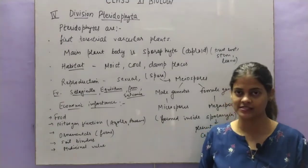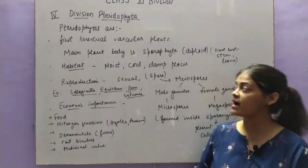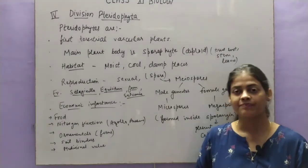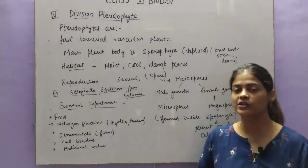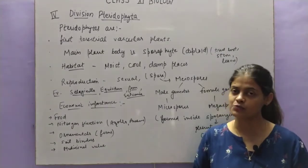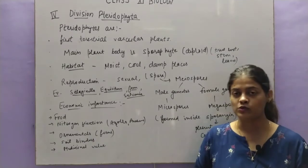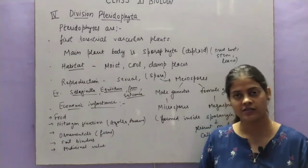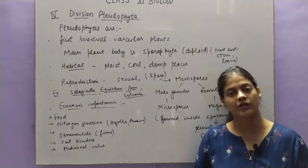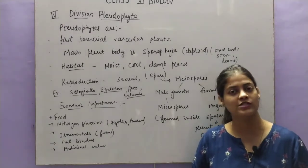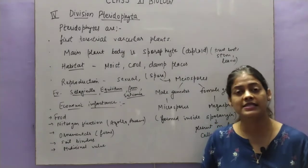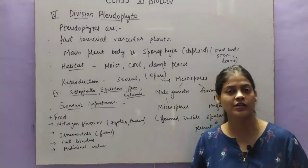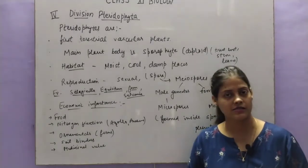The general characteristics of pteridophytes are: these are the first terrestrial vascular plants. As we discussed in the other three divisions, there was no vascular tissue. Vascular tissue is required for transportation — whatever water or minerals plants absorb through roots, it is transported through vascular tissue to other parts of the plant. The food prepared by the plant is also transported. Vascular tissues generally include xylem and phloem.